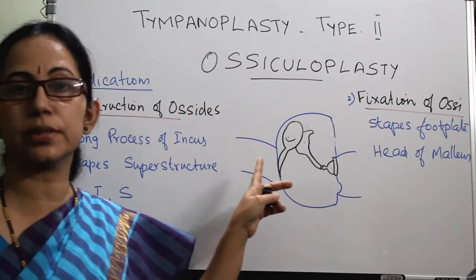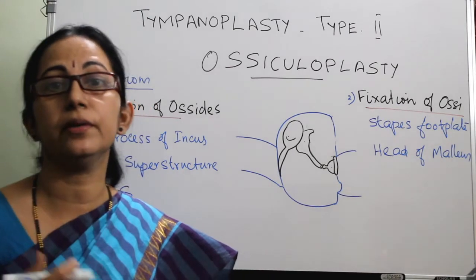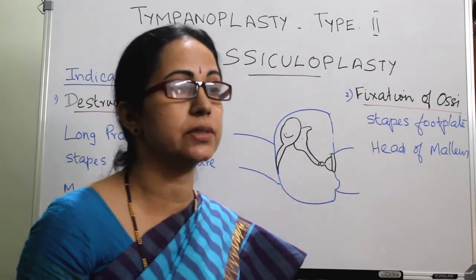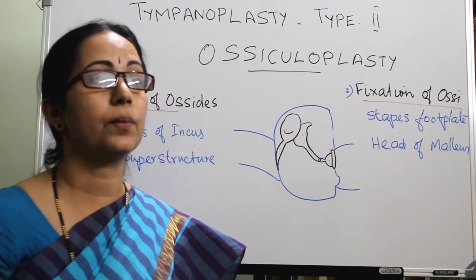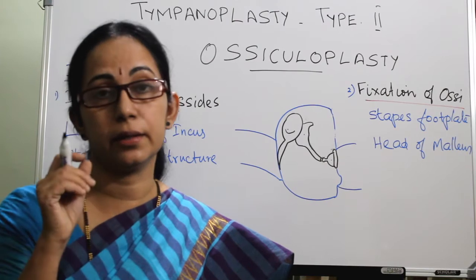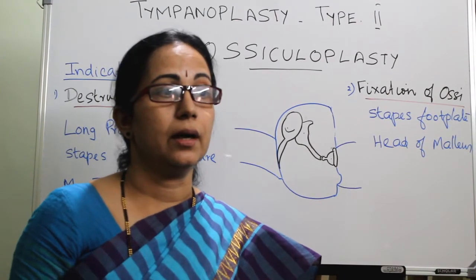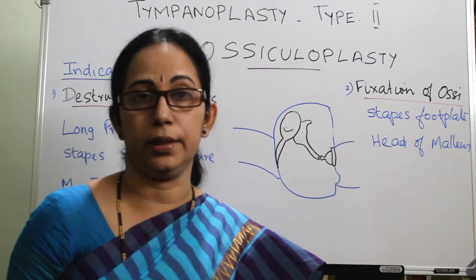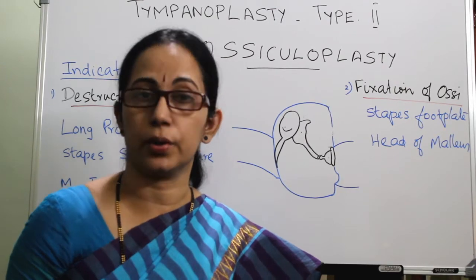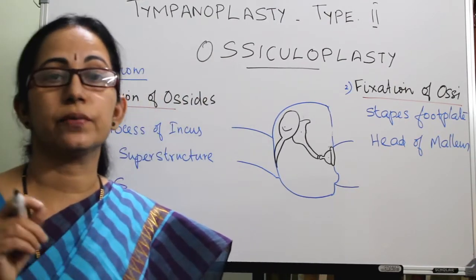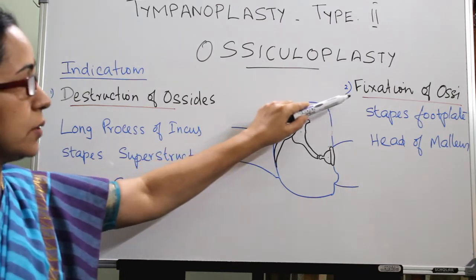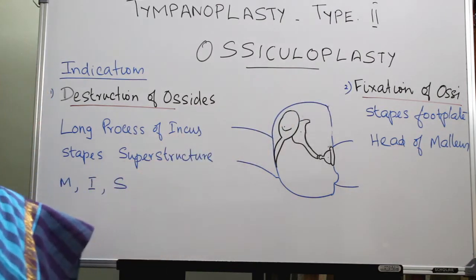These ossicles can be either destroyed or they can be fixed. The commonest cause of destruction of the ossicle is caused by cholesteatoma or by chronic otitis media. The long process of incus is the commonest ossicle eroded by cholesteatoma or chronic otitis media because of the end-arterial blood supply. Indications can be divided into those caused by destruction of the ossicle or those ossicular defects caused by fixation of the ossicle.